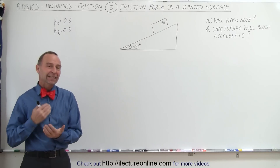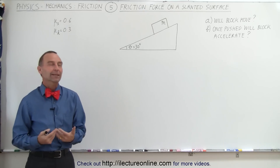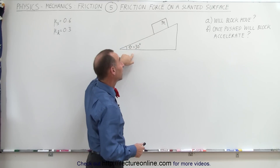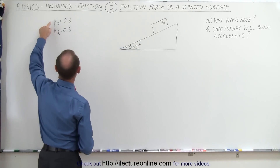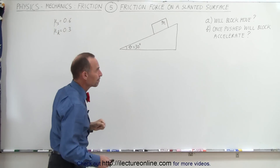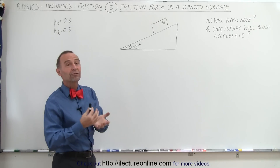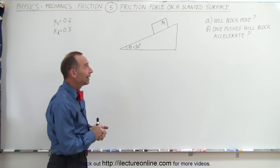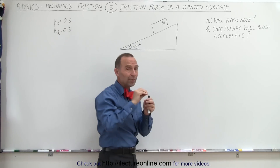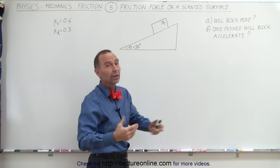Welcome to ElectronLine. In this video we're going to take a look at friction on a slanted plane. Here we have a block sitting on a slanted plane; the angle is 30 degrees, the coefficient of static friction is 0.6, and the coefficient of kinetic friction is 0.3. We're going to figure out the direction and magnitude of the friction force, then whether the block will move, and if we push the block to get it started, whether it will continue to accelerate or slow down and stop.